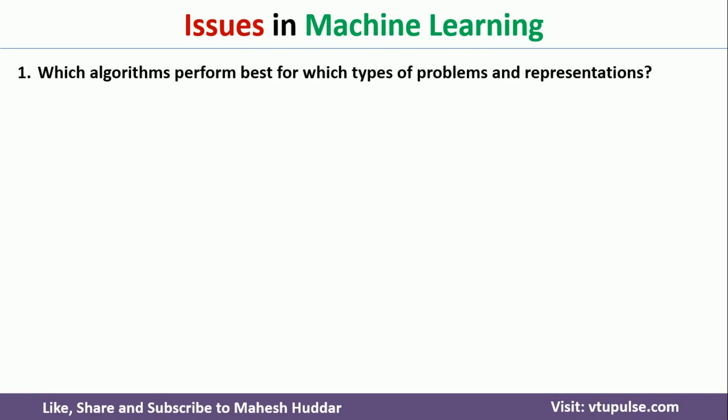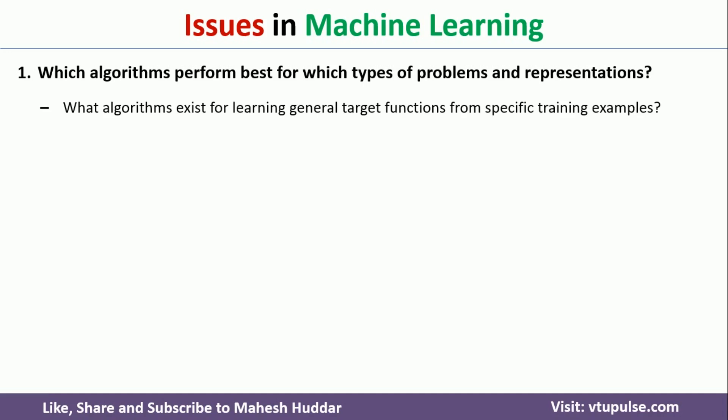The very first issue we face is that there are many algorithms present in machine learning, but which one is supposed to be chosen when solving a particular problem? A particular problem may be solved better with one algorithm, and applying a different algorithm on the same problem may not give better results. The only option left is to try an algorithm, check whether it is working fine, and if not, consider some other algorithm.